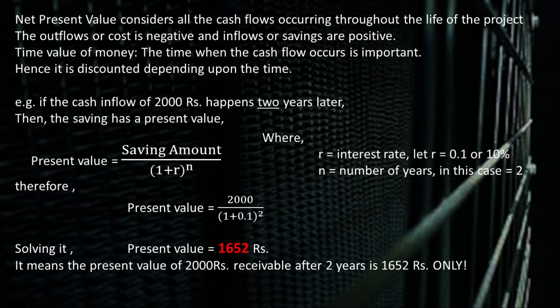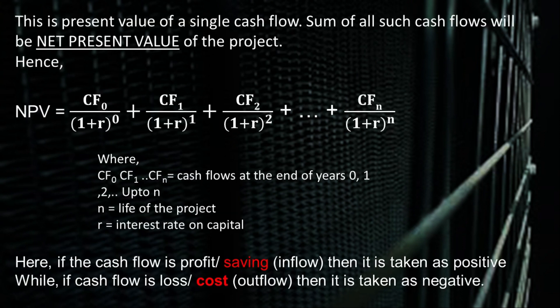So the present value of 2000 will be 2000 divided by (1 + 0.1) raised to 2. After solving, we get the value equal to 1652 Rs., which means the present value of 2000 Rs. receivable after 2 years is only 1652 Rs. This is the present value of a single cash flow.